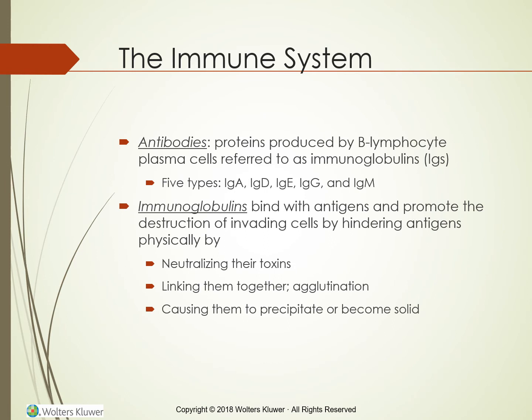Antibodies are proteins produced by B-lymphocyte plasma cells, more correctly referred to as immunoglobulins (IGs). There are five types: IgA, IgD, IgE, IgG, and IgM. Each immunoglobulin has a separate role in maintaining a healthy state. Immunoglobulins bind with antigens and promote destruction of invading cells in two ways. First, they may hinder antigens physically by neutralizing their toxins, linking them together in a process called agglutination, or causing them to precipitate or become solid. Second, antibodies can facilitate destruction of antigens through other mechanisms, such as those performed by non-antibody proteins like the complement system and cytokines.